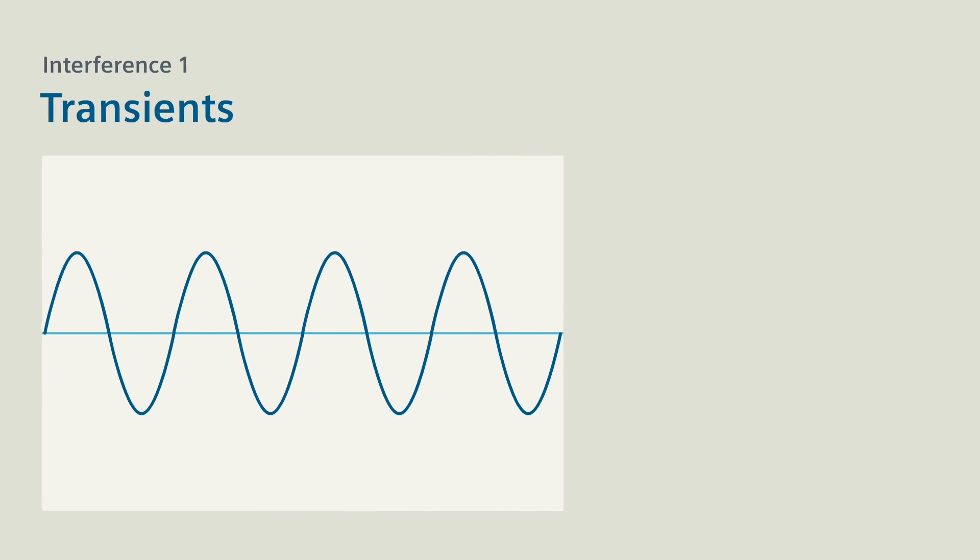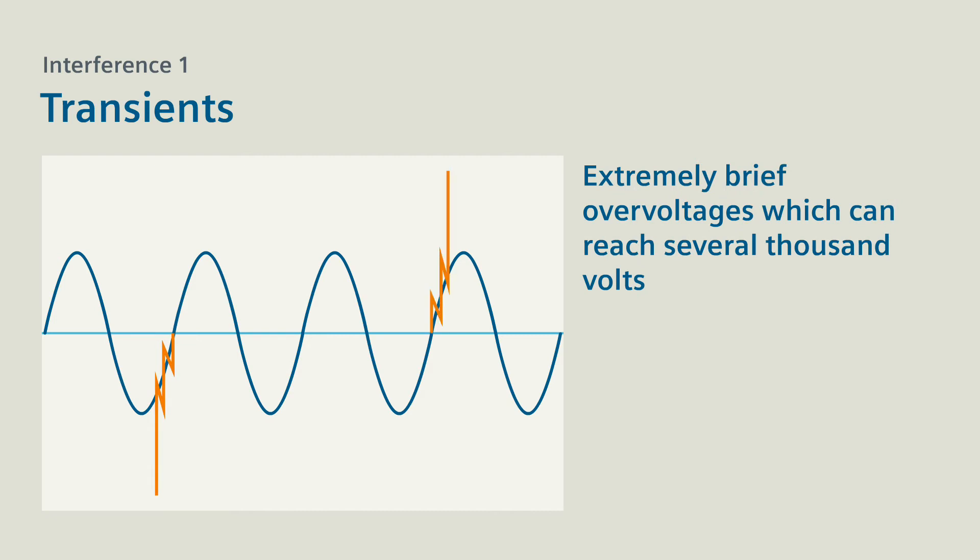Interference 2: Transients. Transients are extremely brief over-voltages which can reach several thousand volts. This is sufficient to destroy power supply units or damage sensitive IT hardware.